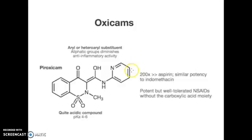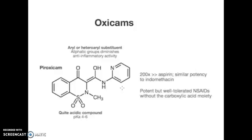Finally, the third functional group will be the heteroaromatic ring right here. This heteroaromatic ring is important for the anti-inflammatory activity and also the acidity of piroxicam. If this group is replaced with an aliphatic group, the anti-inflammatory activity will diminish. Overall, piroxicam is 200 times better than aspirin and has similar potency to indomethacin, due to the enol group and the heteroaromatic ring.